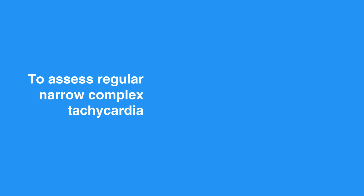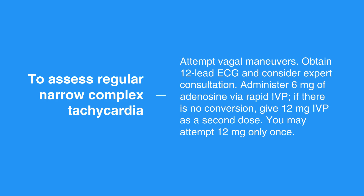To assess regular narrow complex tachycardia, or probable SVT, attempt vagal maneuvers. Obtain a 12-lead ECG and consider expert consultation. Administer 6 mg of adenosine via rapid IVP. If there is no conversion, give 12 mg IVP as a second dose. You may attempt 12 mg only once.